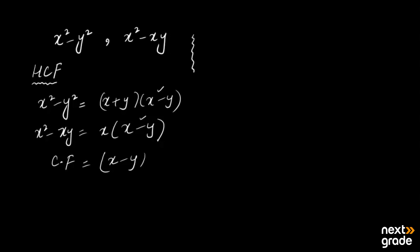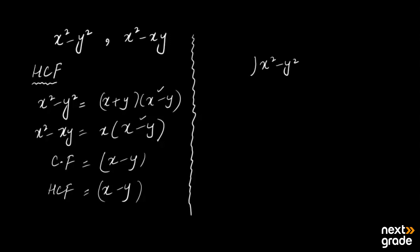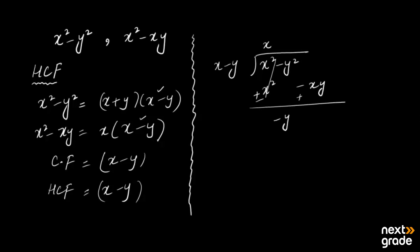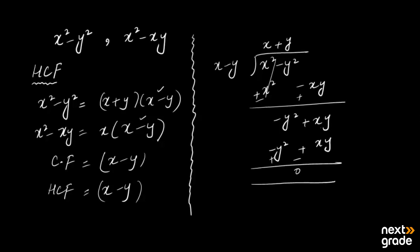Now let's verify the second statement. The common factor we found is the HCF, and the HCF always completely divides the given expression. Take x²−y² and divide it by x−y (the HCF). We get x²−xy in the first step; after subtracting and changing signs, the remainder is −y²+xy. Multiplying y, we get xy−y², and simplifying both terms gives remainder 0. This confirms HCF x−y completely divides x²−y².